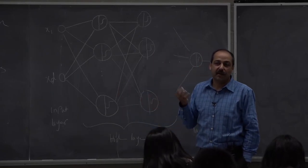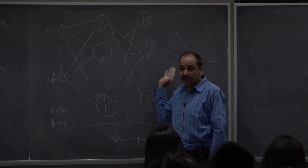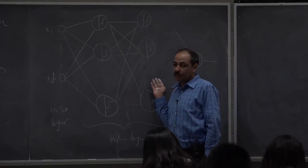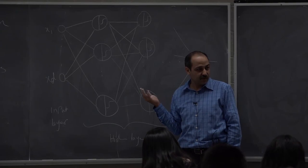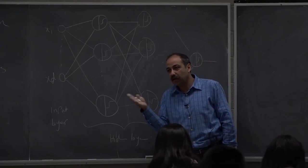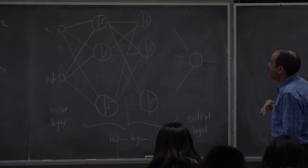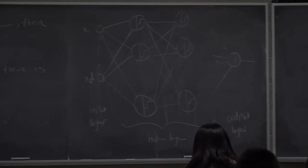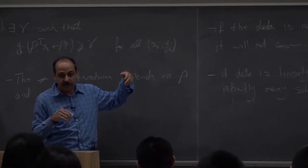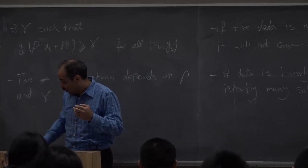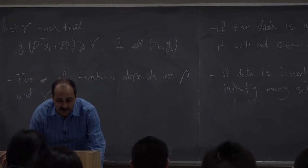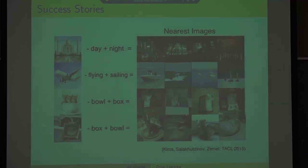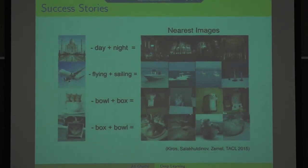What happened in 2006 was that Hinton, for the first time, showed how to train a deep network with many layers using a new algorithm. Later it became clear that even backpropagation works for these deep networks with the right computational power and some assumptions. Neural networks were rebranded as 'deep networks' and achieved state-of-the-art performance on the ImageNet competition, beating everyone else by a large margin.